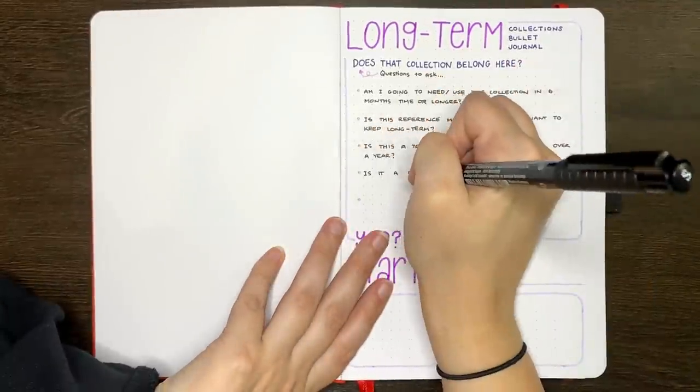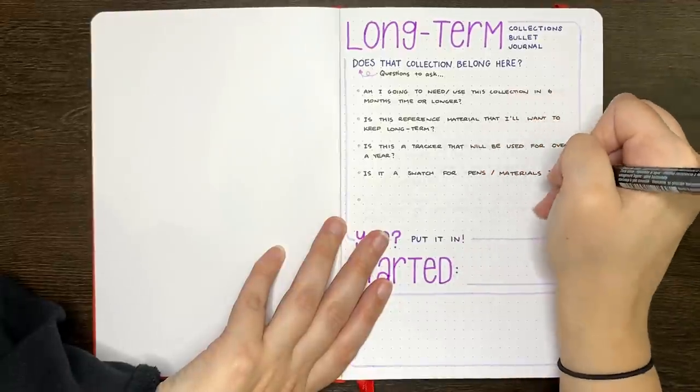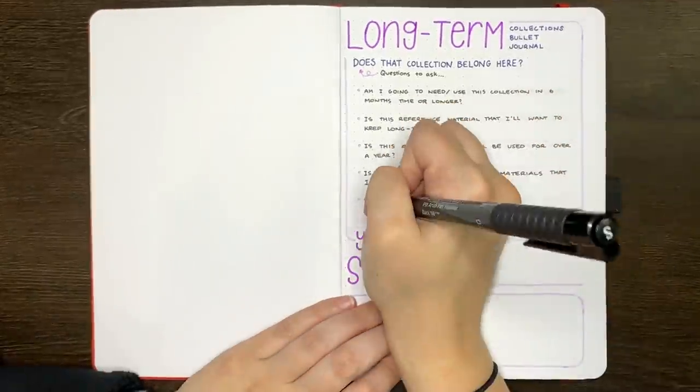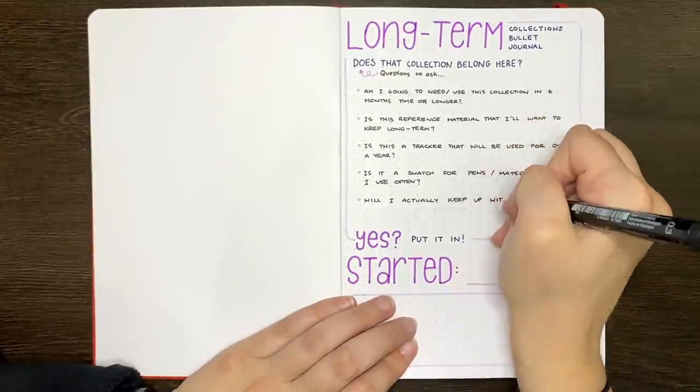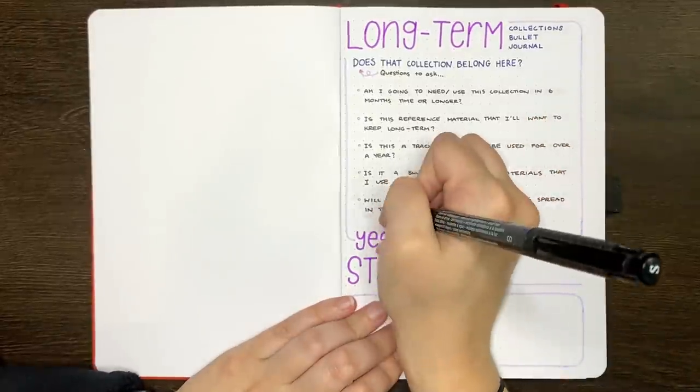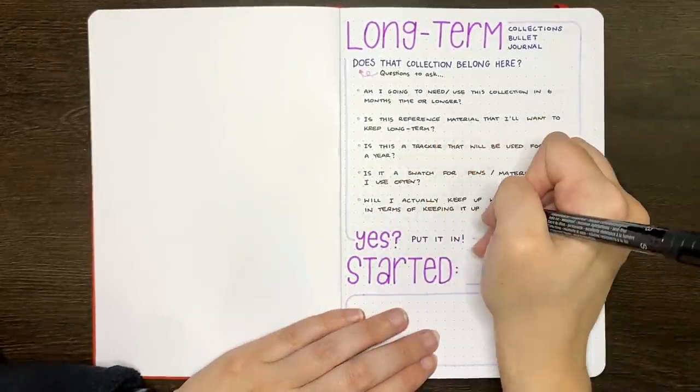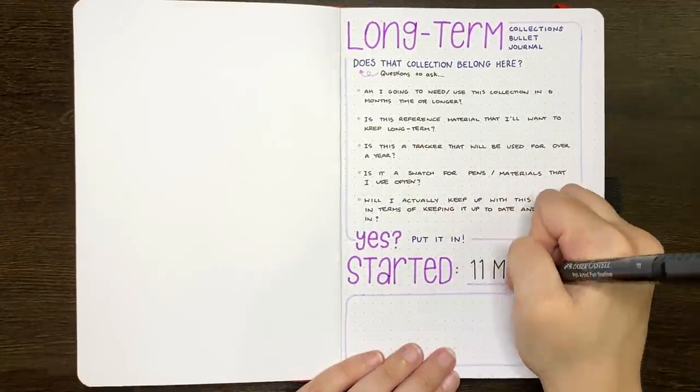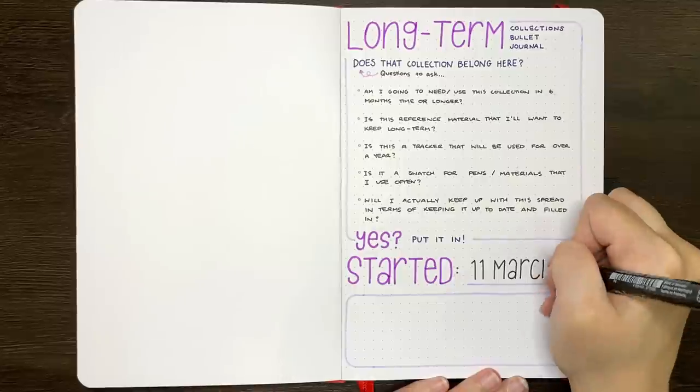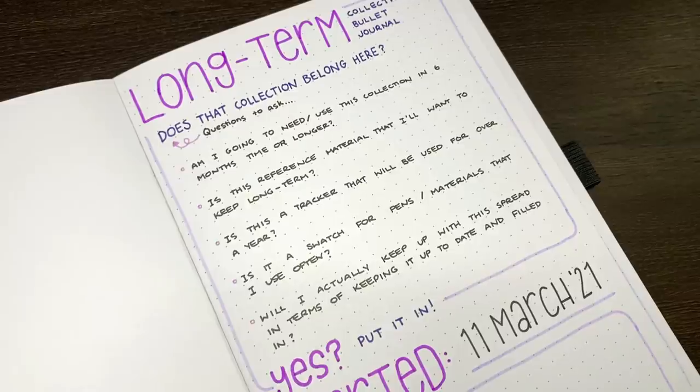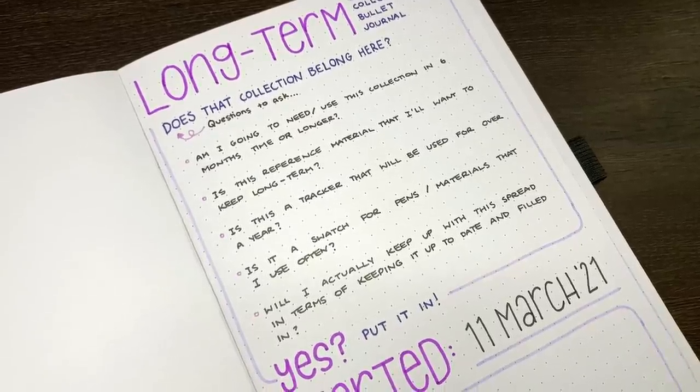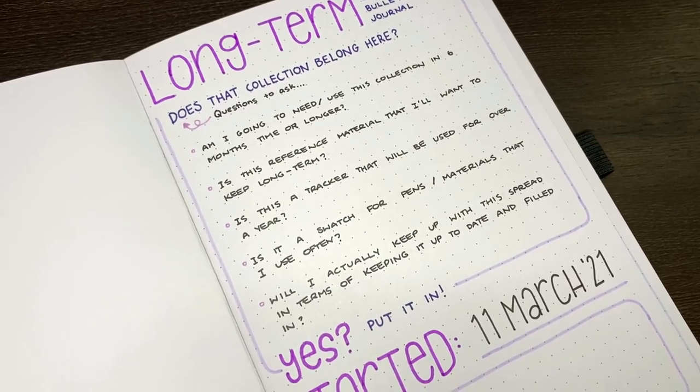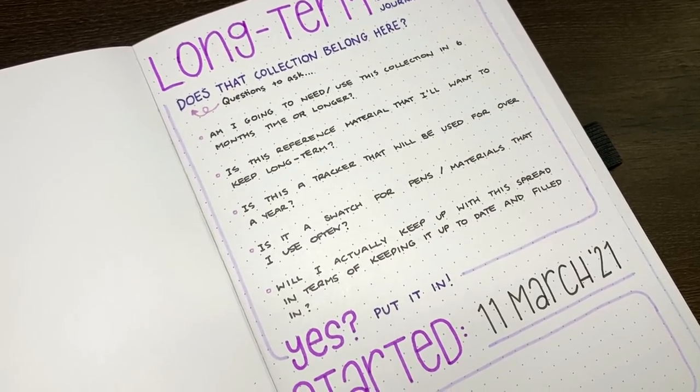Another issue that I had from my previous collection bullet journals is that I've ended up putting in spreads and layouts that don't really fit with my intentions for the journal as a whole. My long-term collections journal is supposed to be a space for collections that are going to last longer than the life of one of my day-to-day bullet journals. So things like reference materials, swatch pages, long-term trackers, things that I'm essentially going to want to reference in years to come.